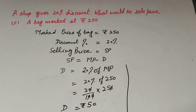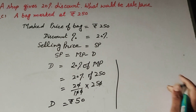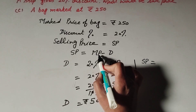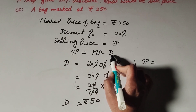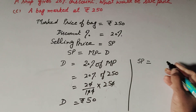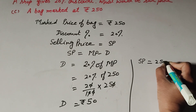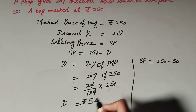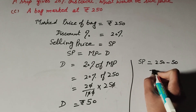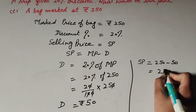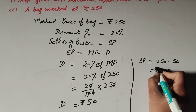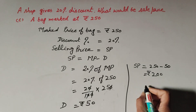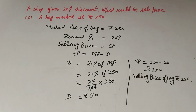Now we find the selling price. Selling price equals marked price minus discount, which is 250 minus 50, equal to 200. So rupees 200 is the selling price of the bag.